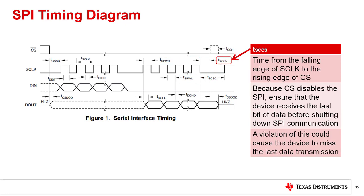TSCCS is the minimum time from the last S-Clock falling edge to the rising edge of chip select. This specification is required for clocking data into the device. Because chip select disables SPI communication, any data must be clocked into the device with the falling edge of S-Clock before chip select rises. It serves as a hold time for the data with S-Clock and a setup time for chip select to the device's internal clock.